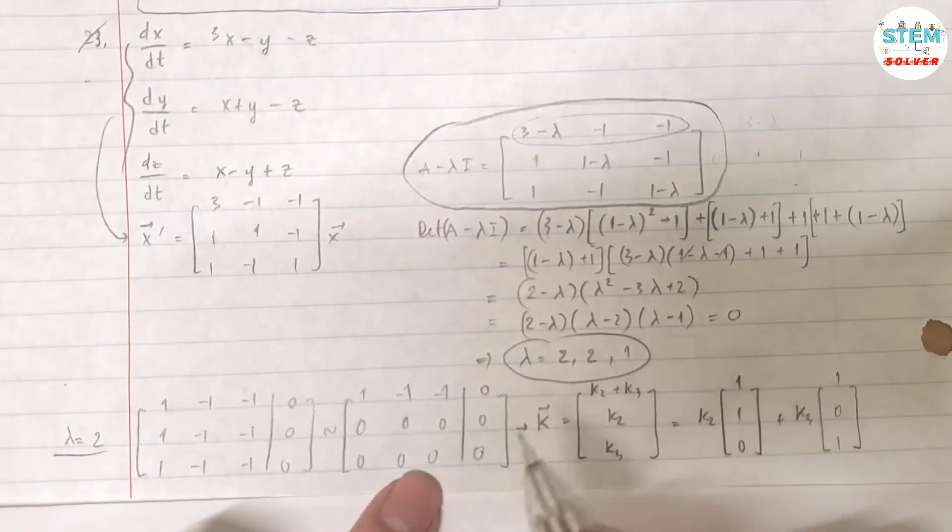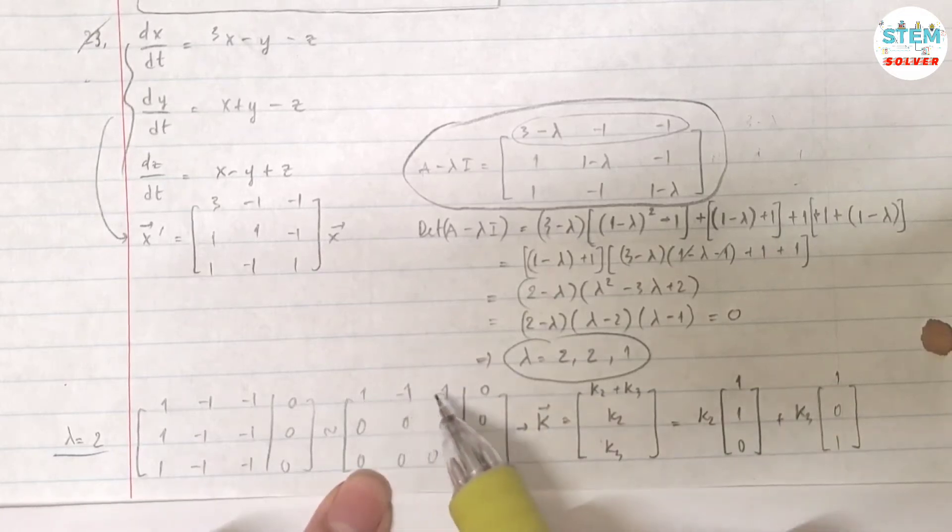This shows me that this matrix has, this system has infinite solution. So in terms of vector k, here's my k1, k2, k3 all the way down the column.